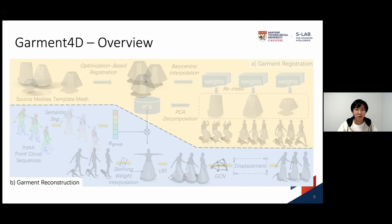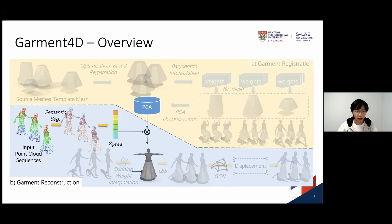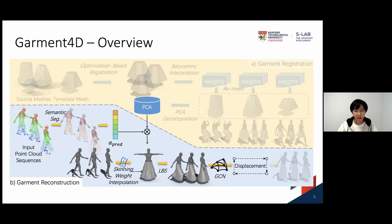After the registration, we are ready to reconstruct garments from point cloud inputs. We first perform a semantic segmentation to get the points of the garment of interest, which is used to predict the PCA coefficients of the observed garment, giving us the canonical garment reconstruction. To further reconstruct posed garments, we first use the interpolated LBS to generate posed garment candidates. Then, a GCN is used to predict displacements to further refine the candidates, which gives the final posed garment reconstruction.